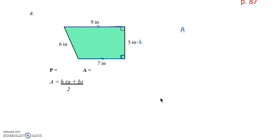So let's calculate the area first this time. The area is 5 times 7 plus 9, all divided by 2. So that's going to be 5 times 16, divided by 2. And when we multiply 5 times 16 and divide it by 2, we're going to get an area of 40. And this is going to be square inches.